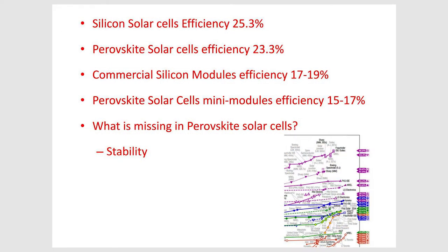Now I come back to the topic. Just read this one: silicon solar cell efficiency is 25.3%, taken from the NREL chart. The perovskite solar cell efficiency is 23.3%, reported certified by the Chinese Academy of Science. The commercial silicon solar modules — even though you have 25.3% efficiency — most of the modules, depending on the supplier, don't go beyond about 20% efficiency.